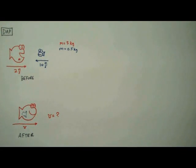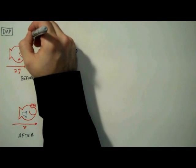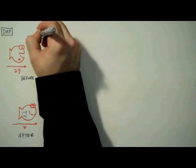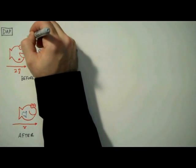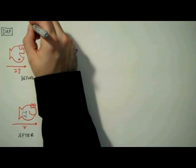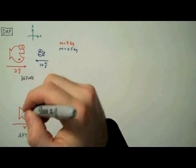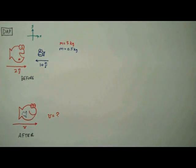Well the first thing we want to do is start by drawing a coordinate system for our problem. So I'm going to assign the positive x direction to be to the right and just to make it look more like a coordinate system I'll include the y direction as well. Not that we're going to need it.